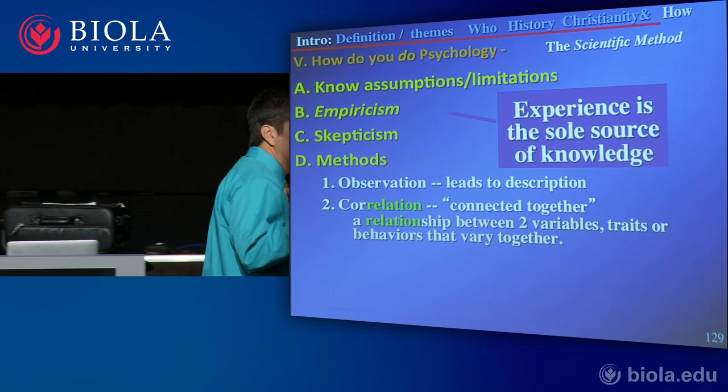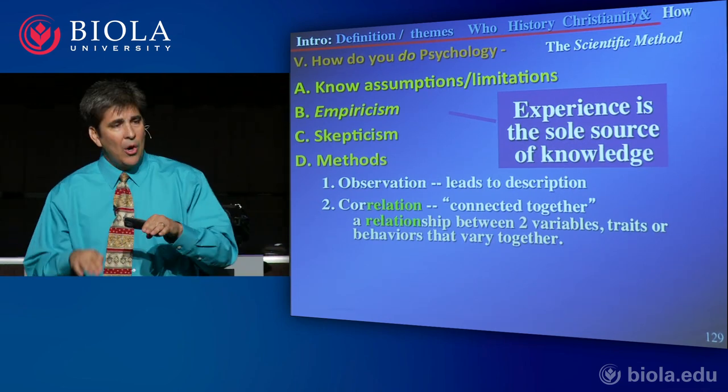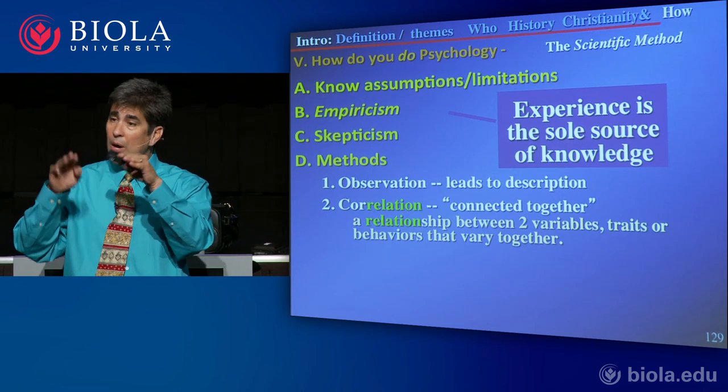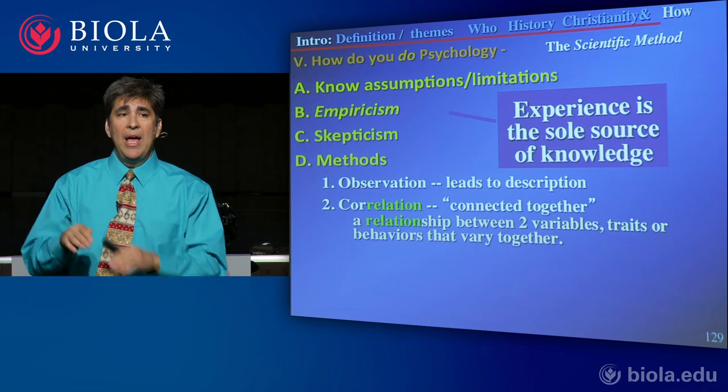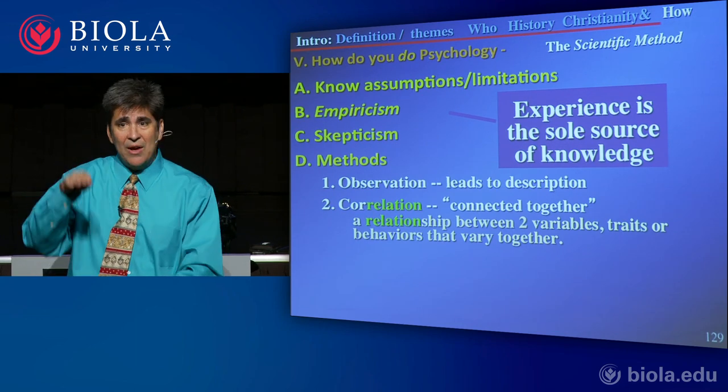Popsicle sales go up, drowning deaths also vary and they go up too. You can also find a negative correlation — one that's completely opposite — where one variable goes up and another goes down. For example, someone said your love of God goes up, then your love of money goes down. As your love for money goes up, your love of God goes down. They're completely negatively correlated. They're related.